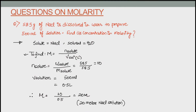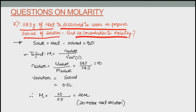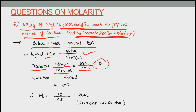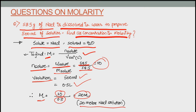Let us solve a question on molarity. 585 grams of NaCl is dissolved in water to prepare 500 ml of solution — find its concentration in molarity. The solute is NaCl and the solvent is water. Number of moles = 585 ÷ 58.5 = 10 moles. Volume = 500 ml = 0.5 litre. Therefore molarity = 10 ÷ 0.5 = 20 molar NaCl solution.